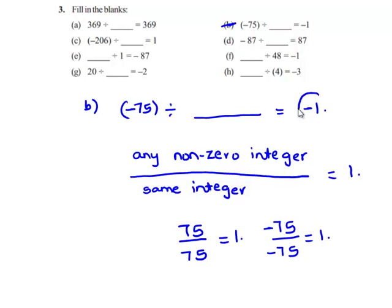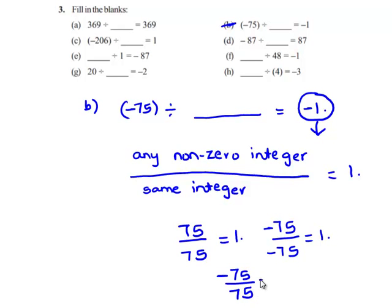But we can see that the value in the answer is negative 1, which bears a negative sign. That means we have to divide two integers which are having opposite signs. This implies negative 75 when divided by positive 75 gives negative 1. Therefore, the answer is positive 75.